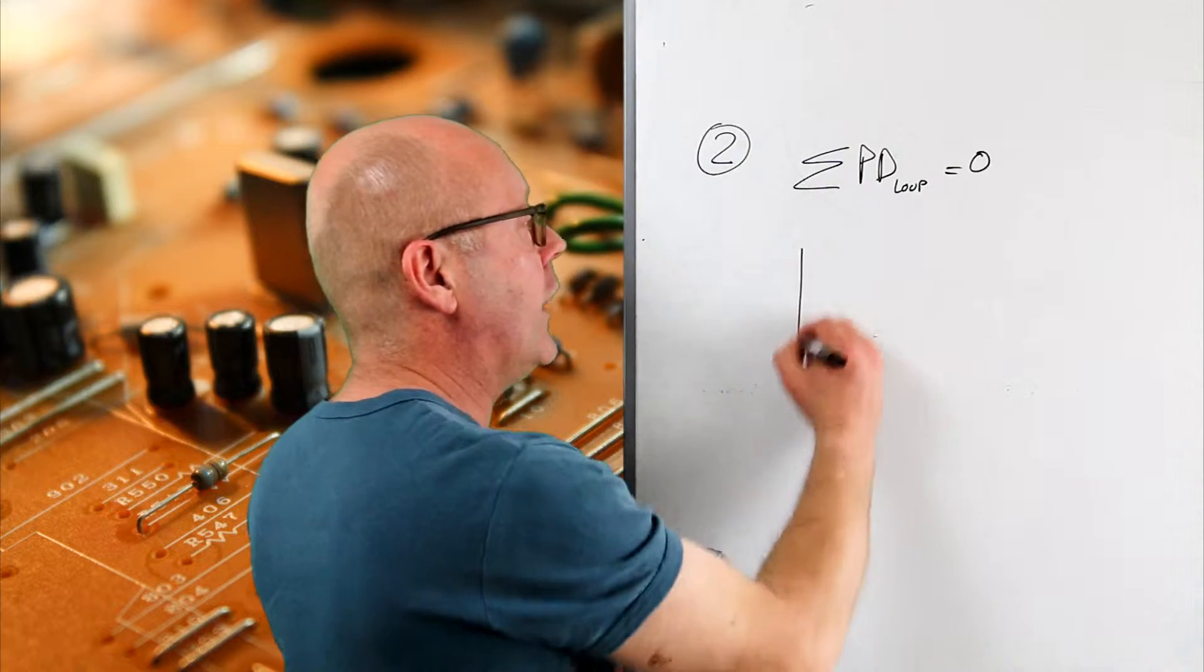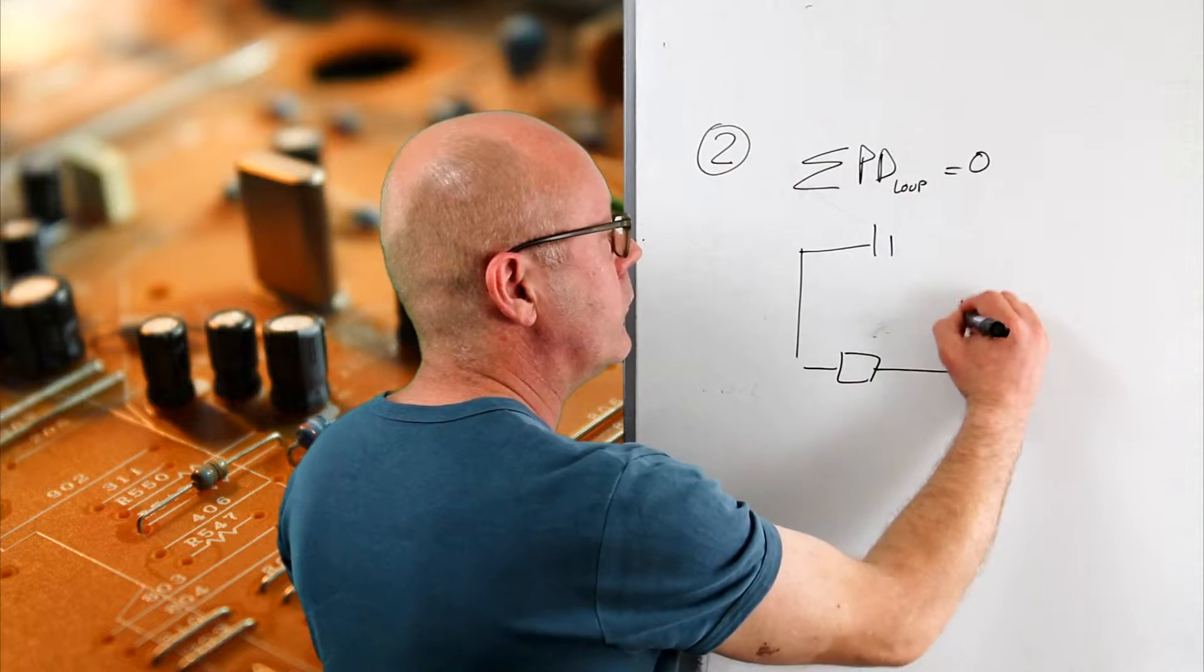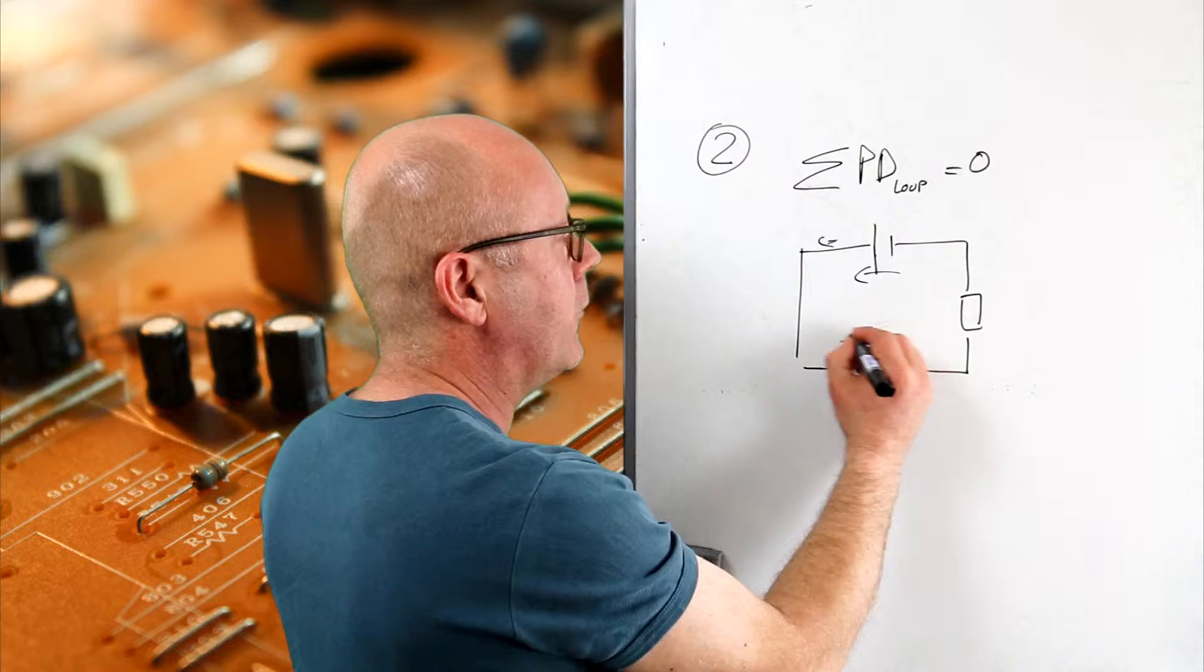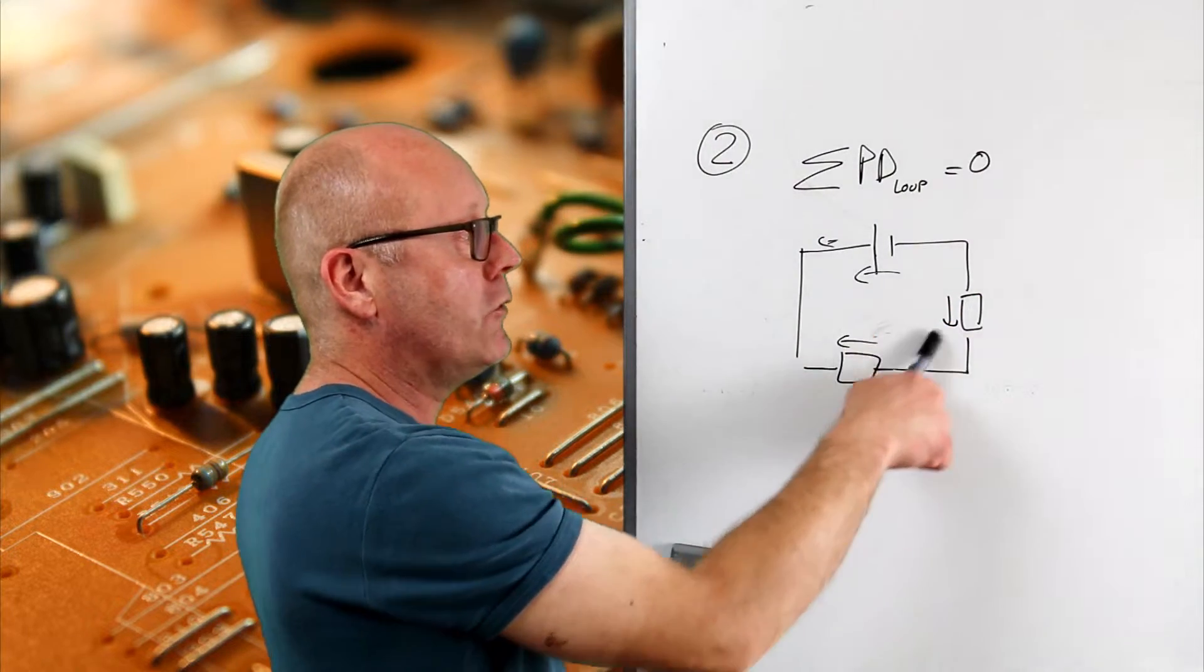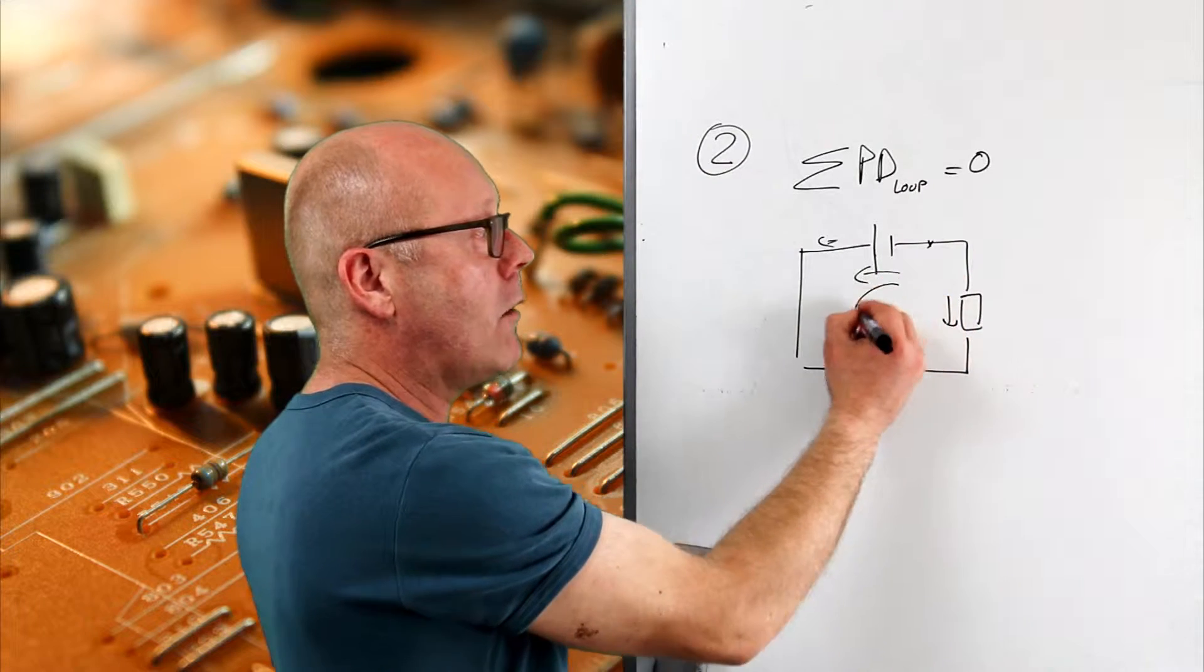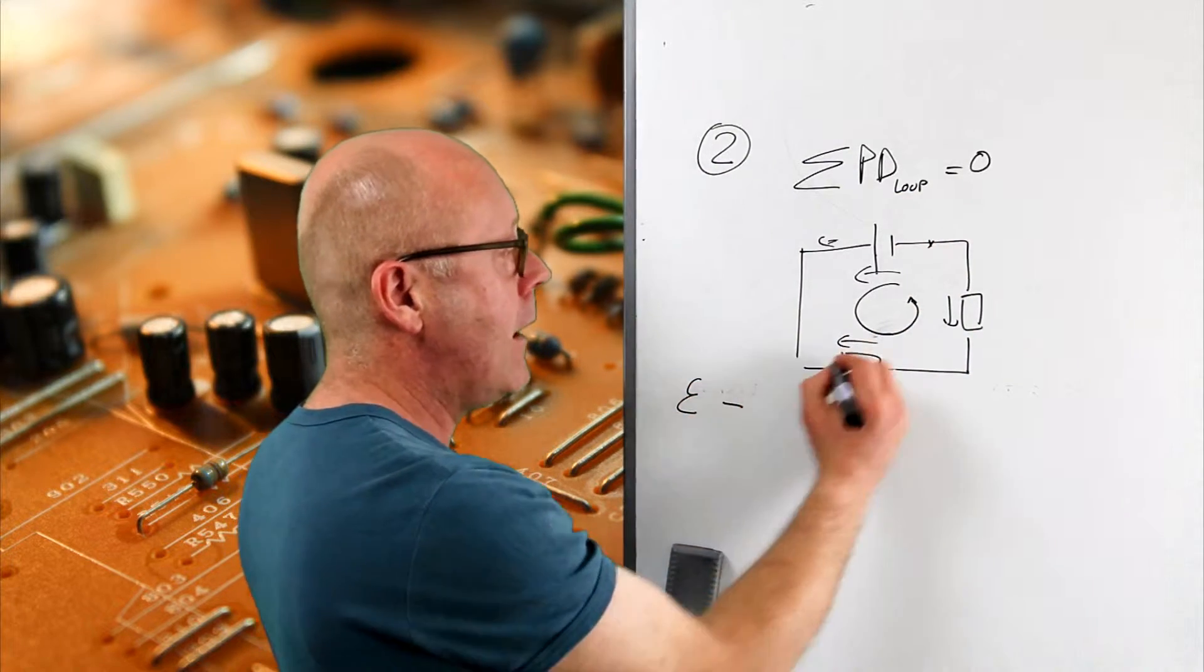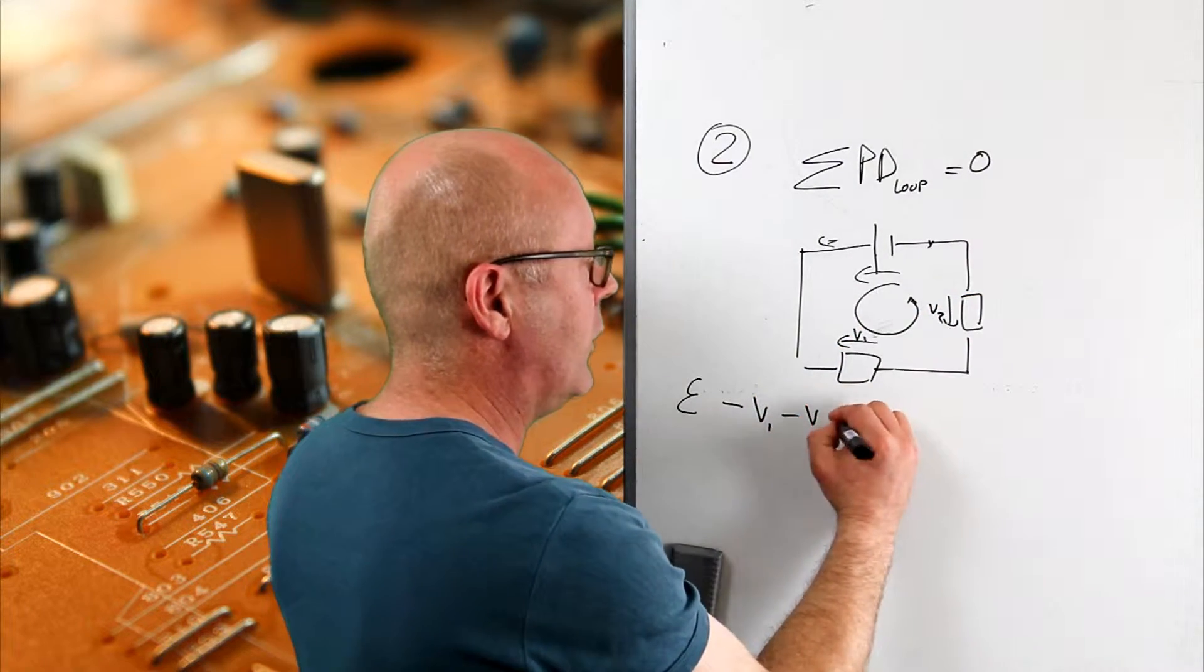Well, if I had a circuit with different elements, so I got a current like this, it says that the sum of all the potential differences when I go around the loop equals zero. So here it would be the EMF minus V1 minus V2 equals zero.